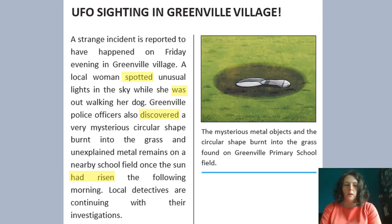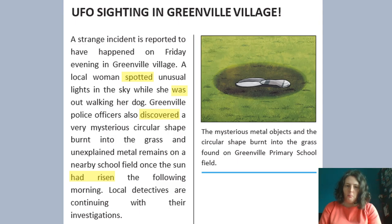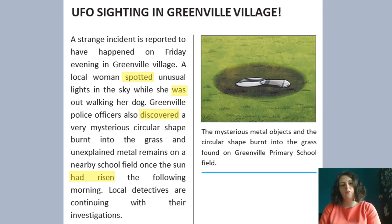I've put some things in yellow here. I haven't highlighted the whole sentence, but I have put in yellow some past tense verbs — that was the colour I chose on my checklist. So any verb which is in the past tense: 'spotted' ends in -ed; 'was' is a past tense verb; 'discovered', another one that ends in -ed; and 'had risen'. They are all past tense verbs, so I've highlighted them in yellow.